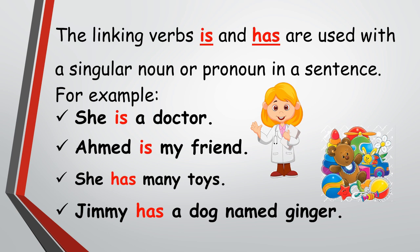In the first two examples, the linking verb 'is' is used with a singular pronoun 'she' and with a singular noun 'Ahmad.' The linking verb 'has' is used in the last two examples with the singular pronoun 'she' and with the singular noun 'Jimmy.'